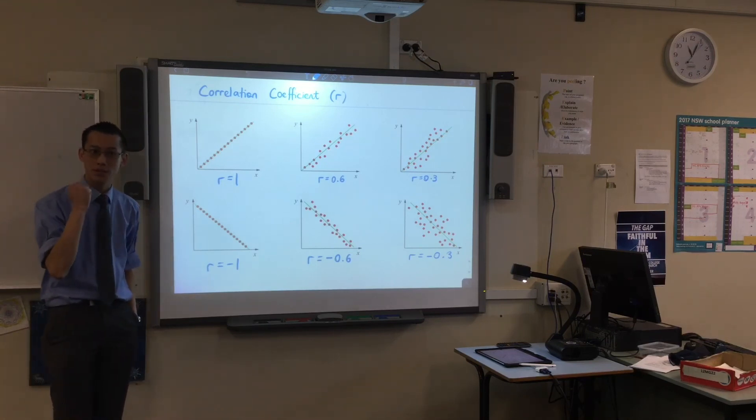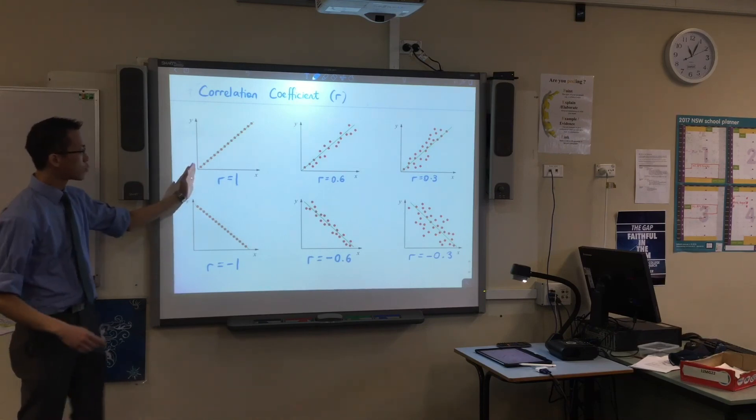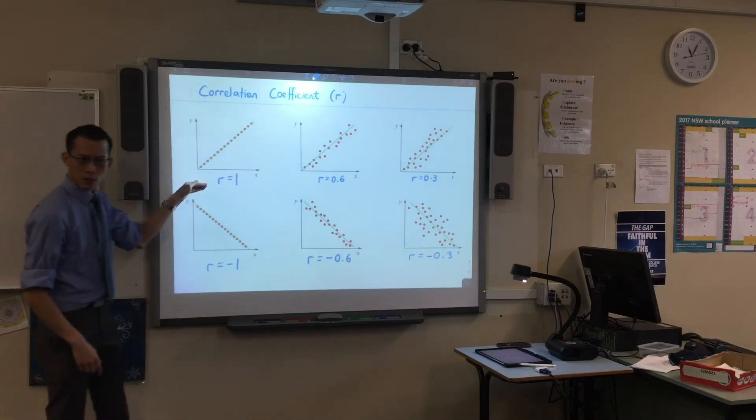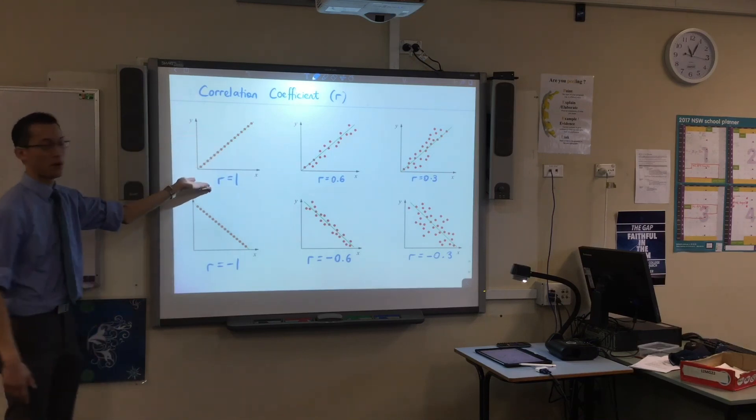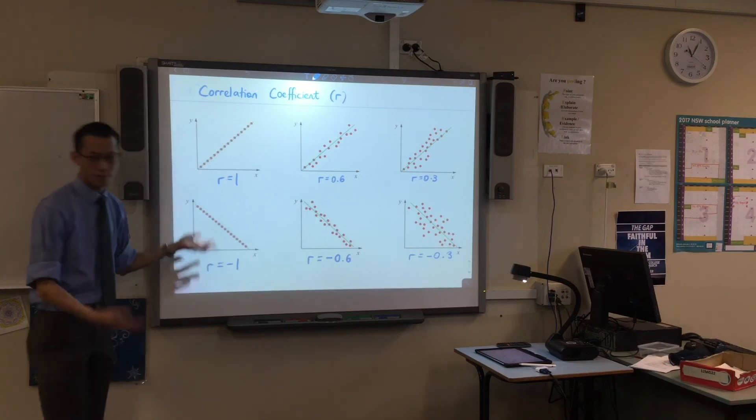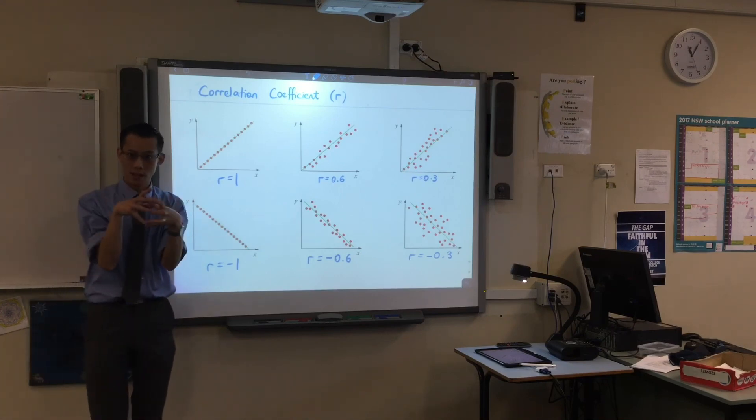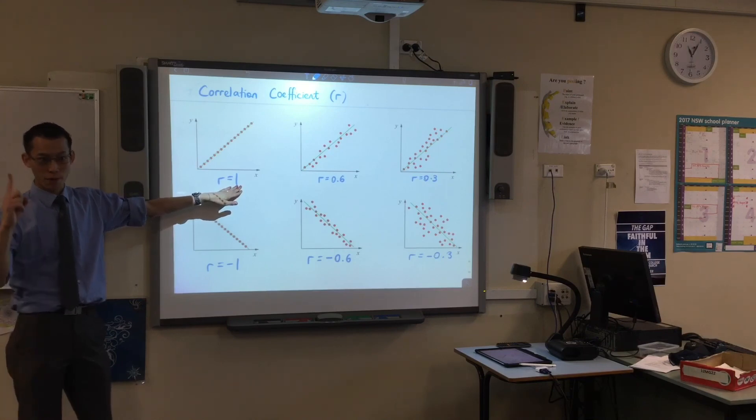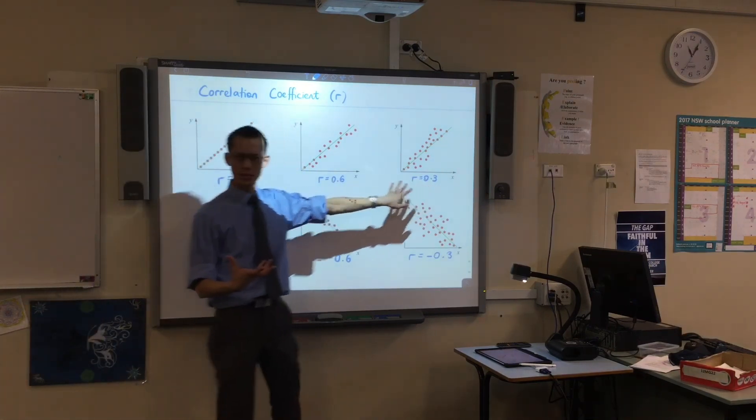So, two things that we're looking for here in terms of the correlation coefficient. Number one, as one number gets bigger, does the other one also get bigger? Like, do they get bigger together? If they do, it's a positive correlation, so you get these positive numbers. Negative, the other way around. Secondly, not only am I thinking about the direction, I'm also thinking about how closely things bunch, okay? So if they're super close, you're going to get the correlation coefficient of 1. As it gets smaller, you get more spread out. Does that make sense? Thank you very much.